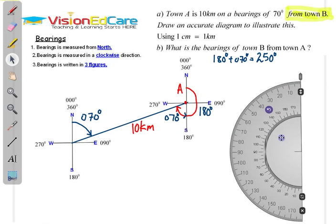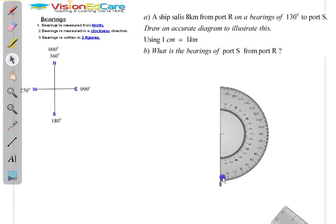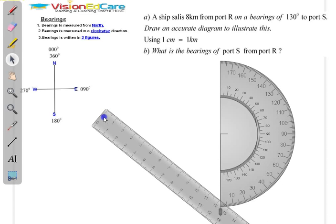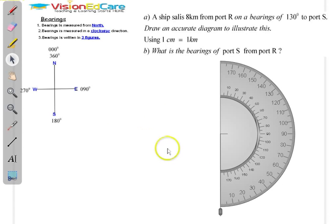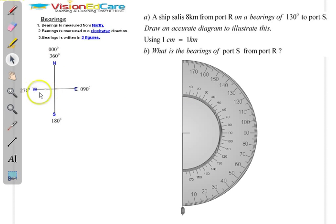I am going to give you a practice question. Press pause and have a go at the question. The tools that you need are a protractor and a ruler. Make sure you use the scale that is given. It is very important to draw your cardinal points at each point and measure from north in a clockwise direction. Thank you for listening.